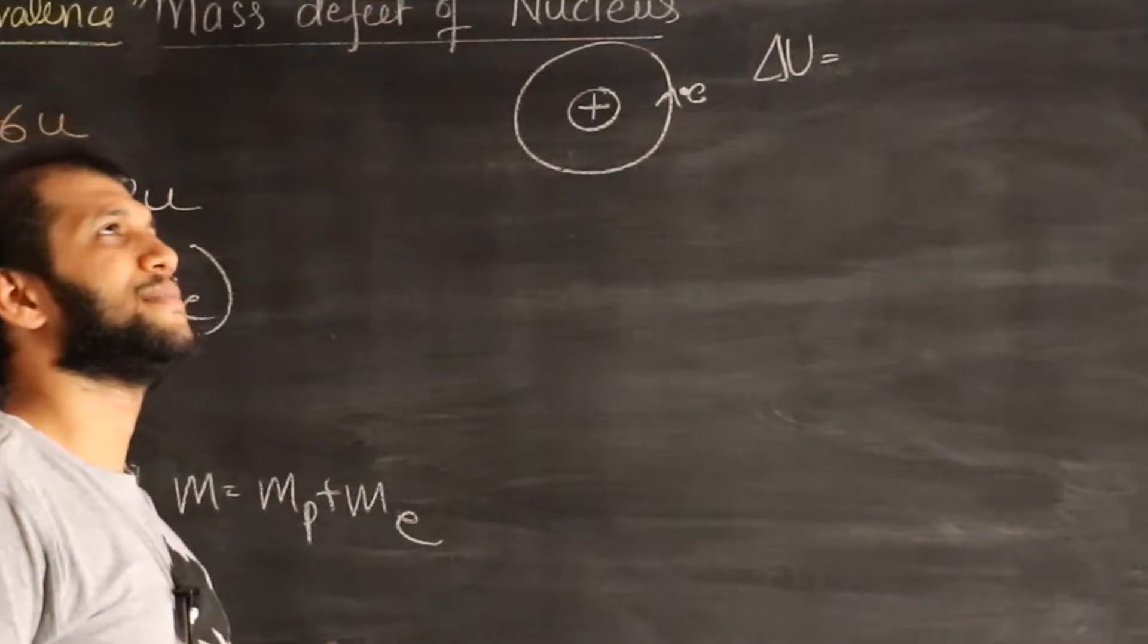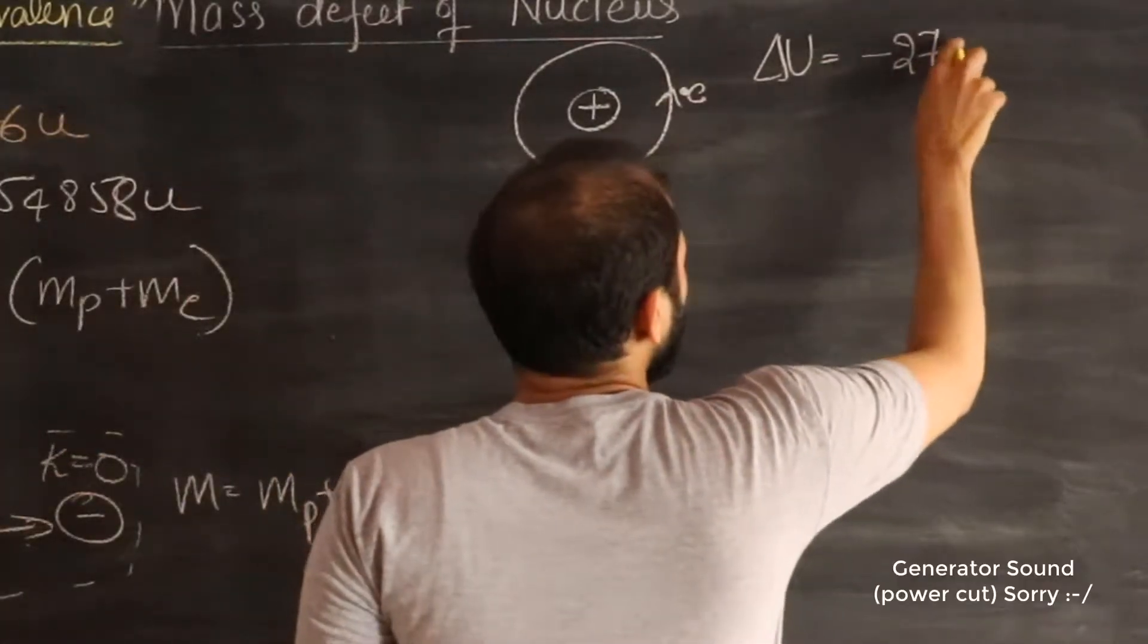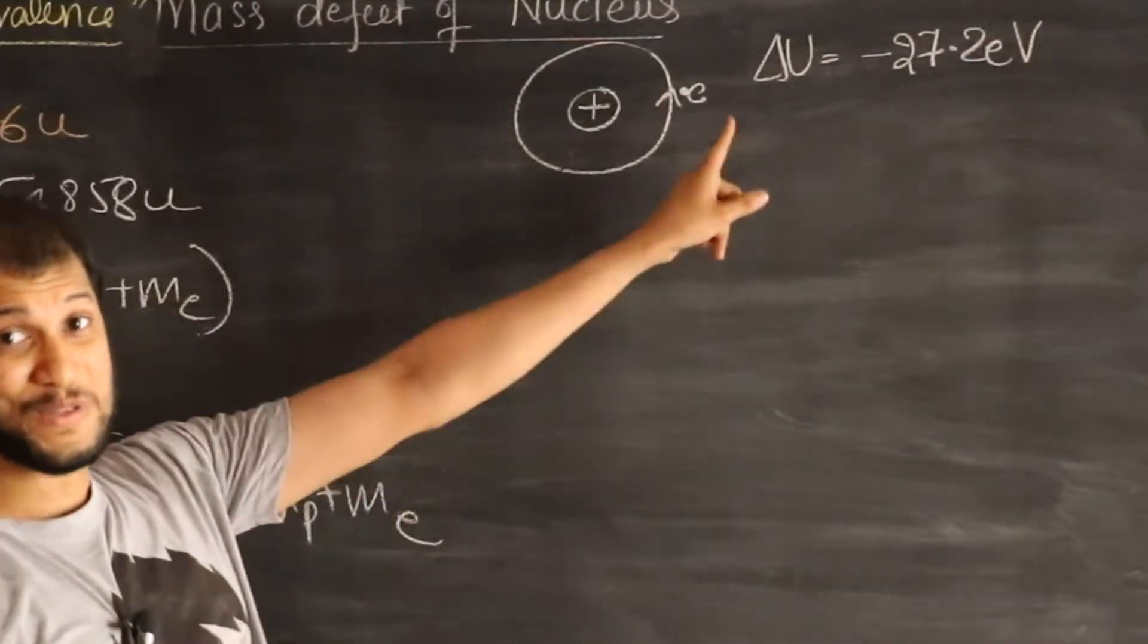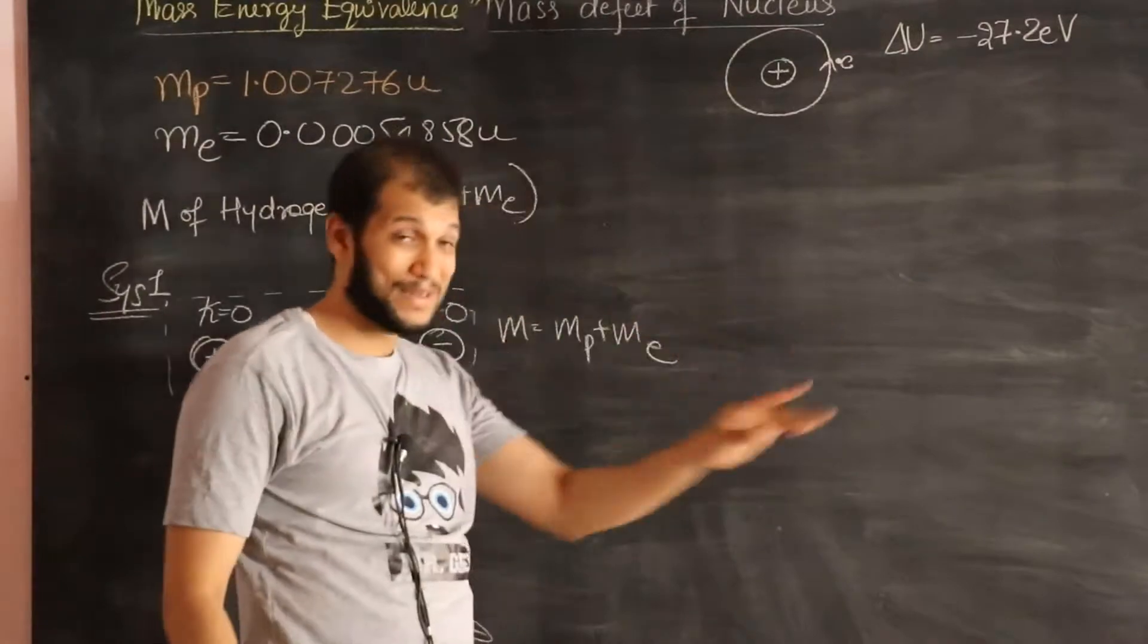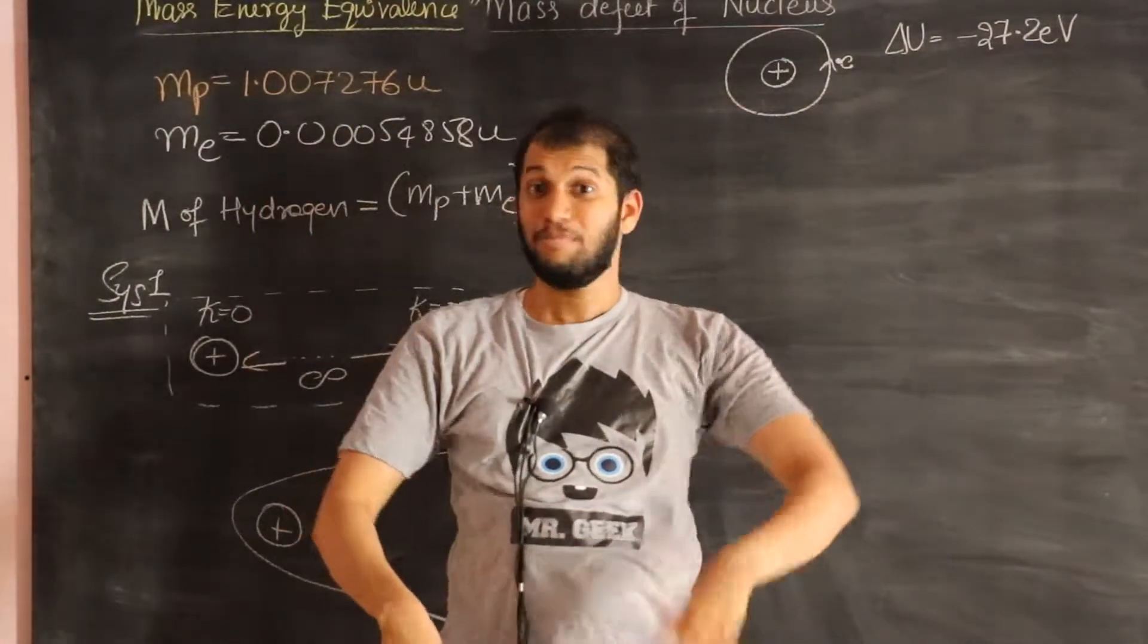That's minus 27.2 electron volts. I happen to remember that number. And if you studied Bohr's theory, you should also remember that number. That's a famous number. So that's the decrease in the potential energy. But hey,